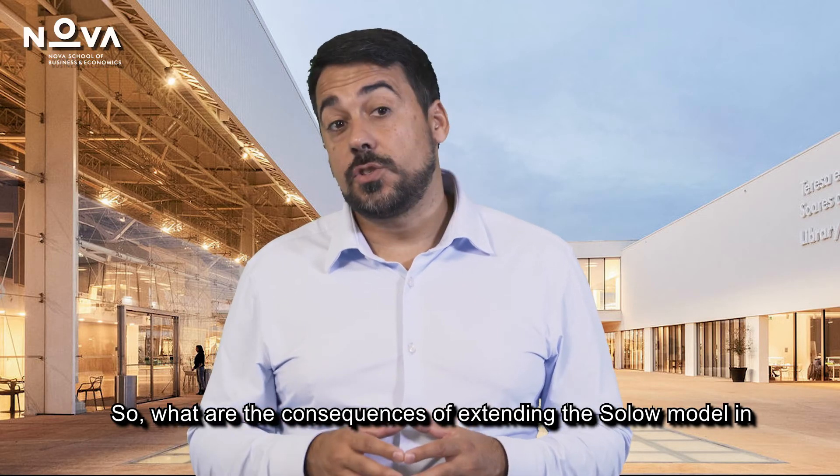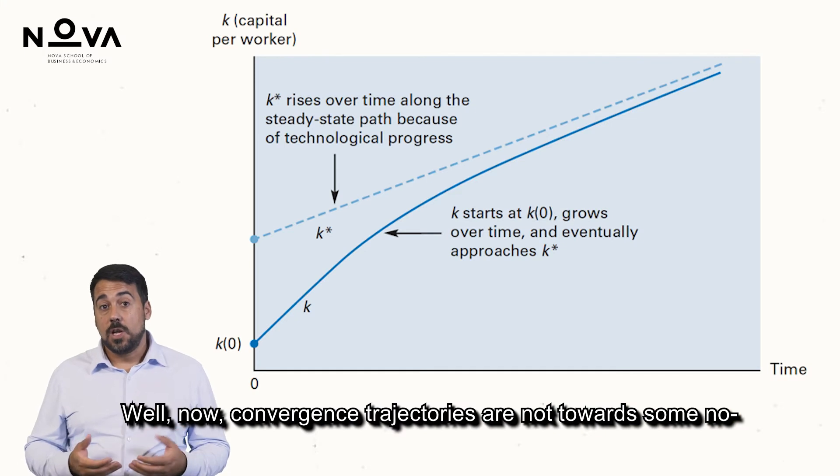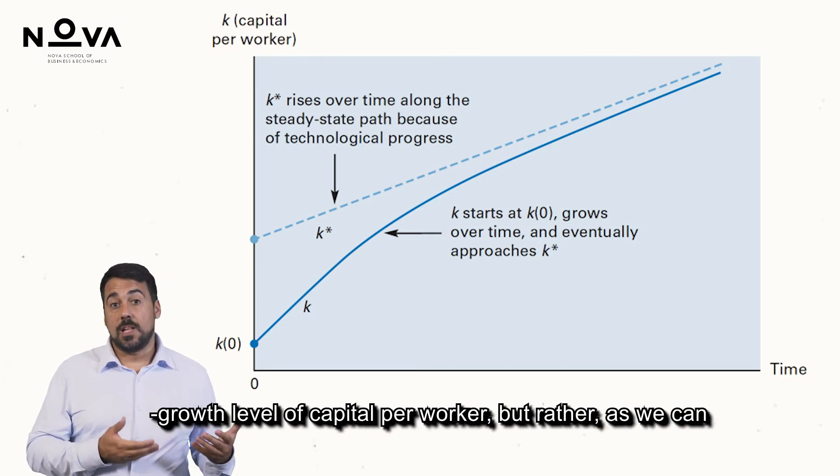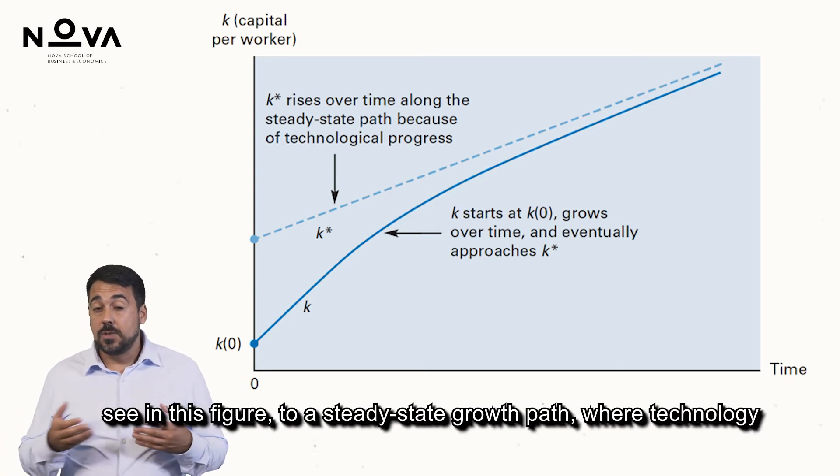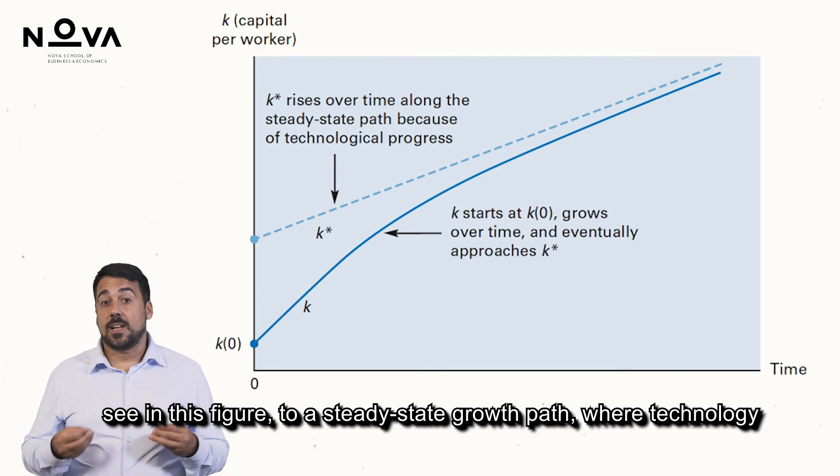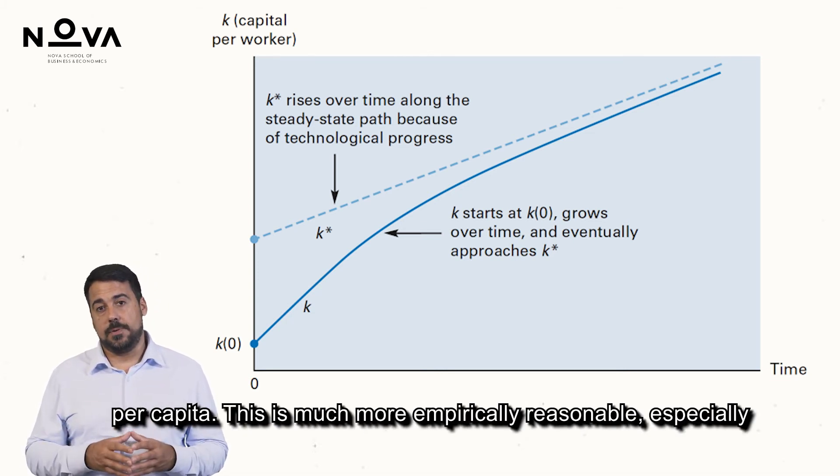So, what are the consequences of extending the Solow model in this way? Well now, convergence trajectories are not towards some no growth level of capital per worker, but rather, as we can see in this figure, to a steady state growth path where technology is the only factor leading to increases in capital and GDP per capita. This is much more empirically reasonable.